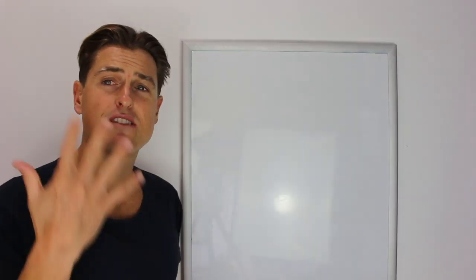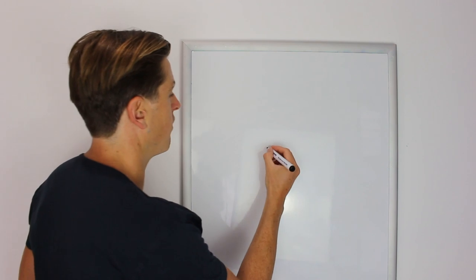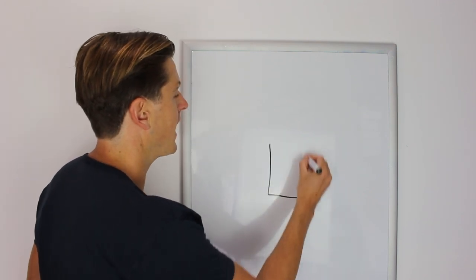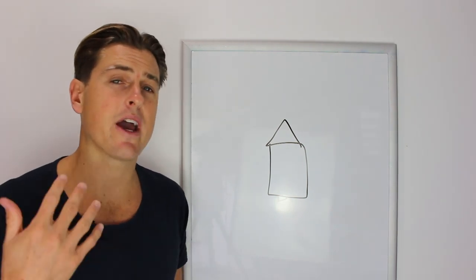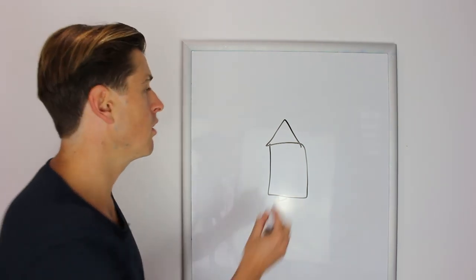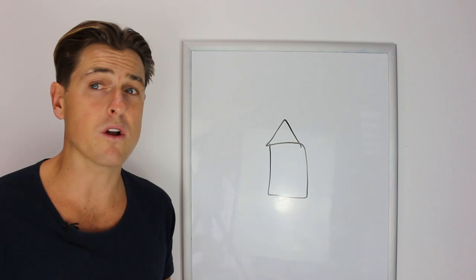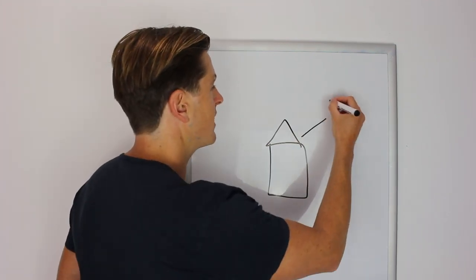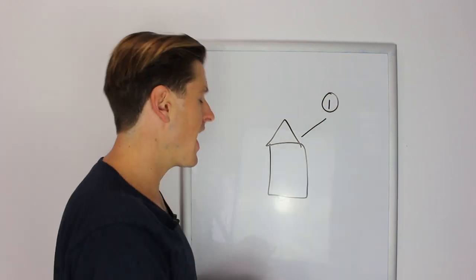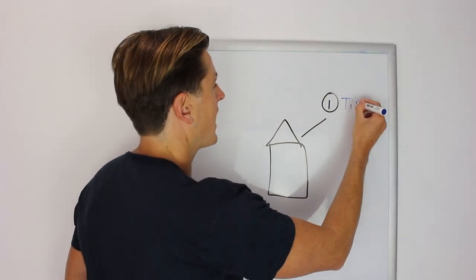For me personally there's five rules that I follow when buying any investment property and this is based on my experience of buying a lot of property and listening to a lot of different people talk about what's worked and what hasn't worked for them. The first thing that I do is I absolutely make sure I nail timing.